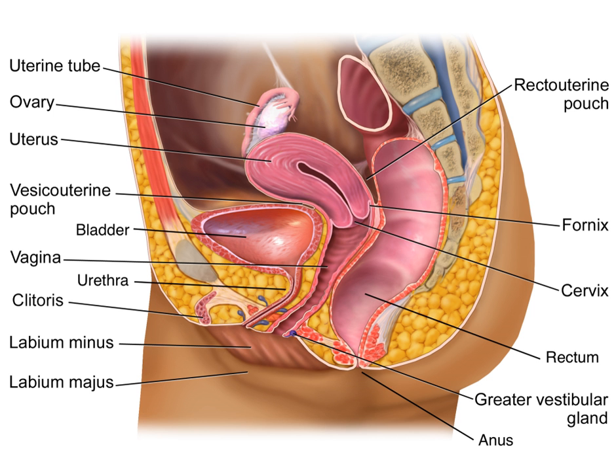Internal and external organs are included in the reproductive system. There are two reproductive systems, including the male and female, which contain different organs from one another. These systems work together in order to produce offspring.